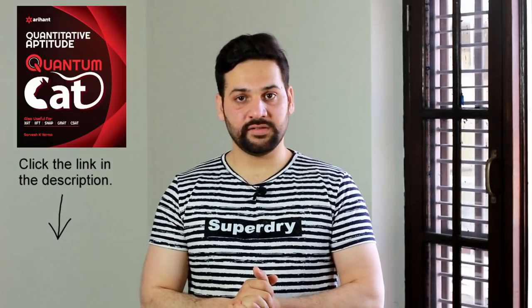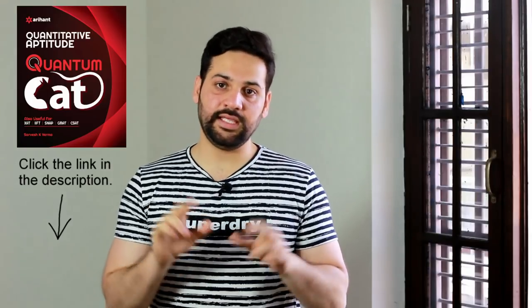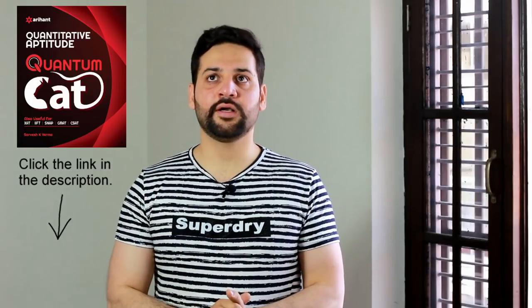My recommendation is Sarvesh Kumar Varma — yes, Quantum CAT by Sarvesh Kumar Varma. This is the best book for the quantitative aptitude section of IBPS PO, SBI PO, RBI Grade B, and even NABARD Grade A exams.